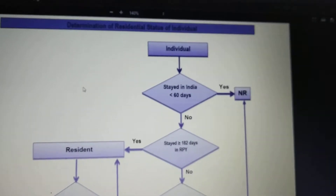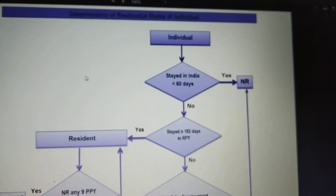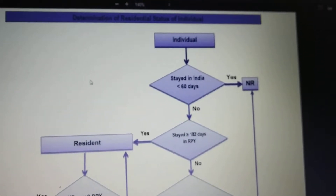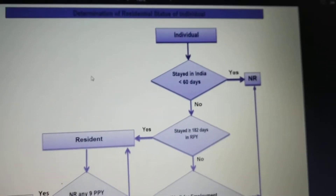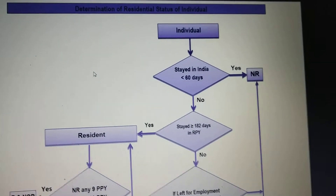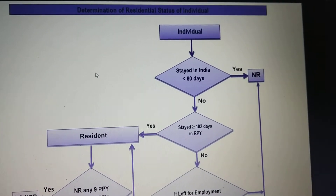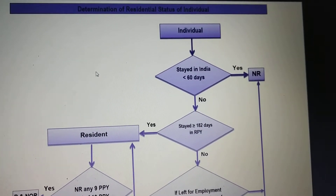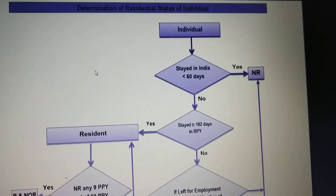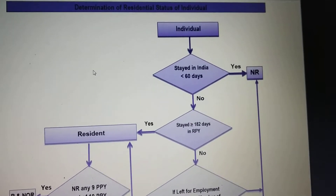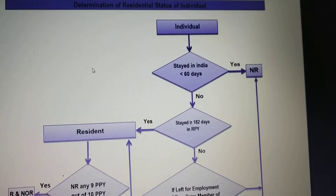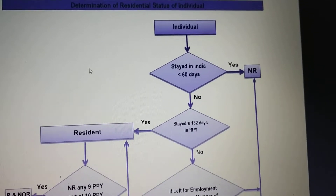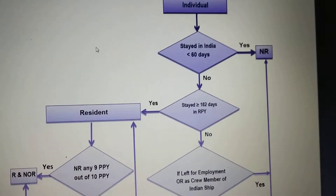Determination of residential status of an individual. First condition: we will check whether that individual stayed in India less than 60 days. If yes, then he will be non-resident. If no, we proceed to the next condition.